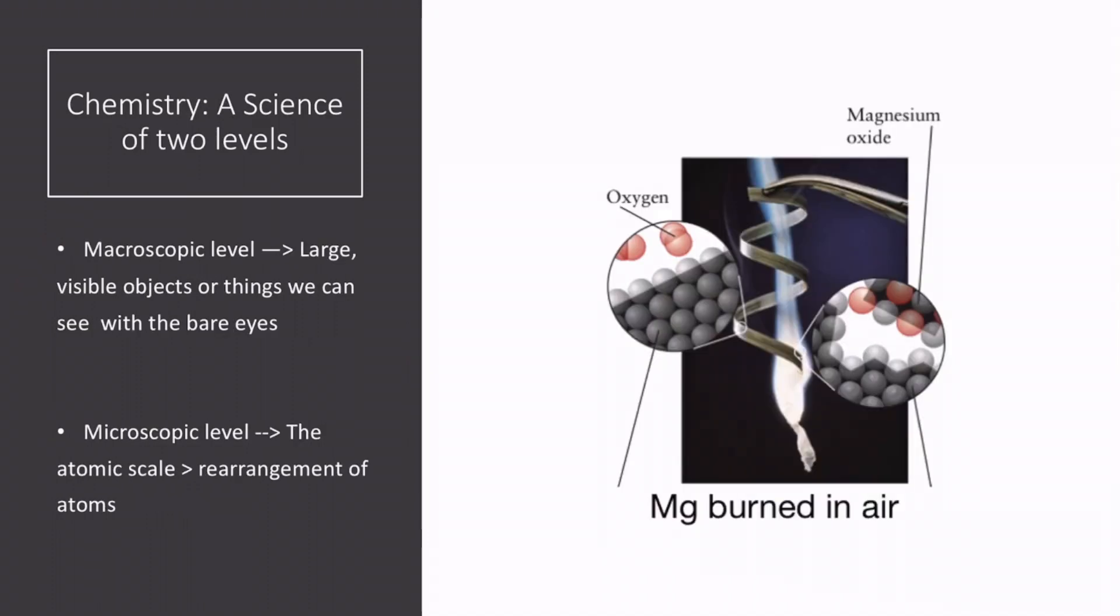Chemistry is a science of two levels. On the one hand, we have the Macroscopic Level, which are things that we can see with our bare eyes. On the other hand, we have the Microscopic Level, which is the Atomic Scale. We can only see at this scale using things like microscopes, and this is where chemical reactions happen.